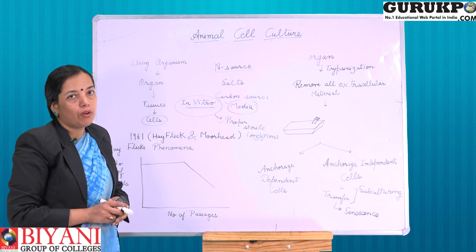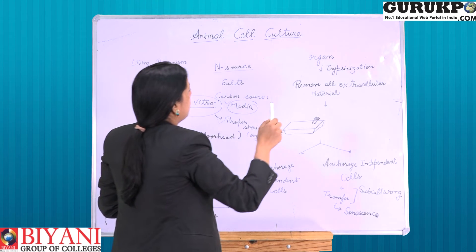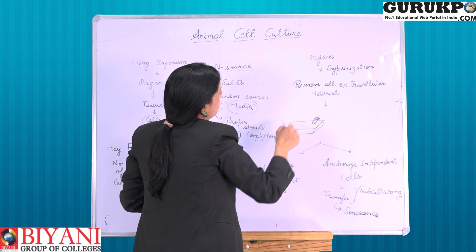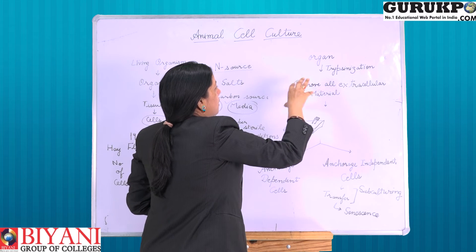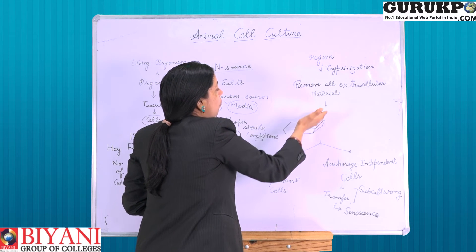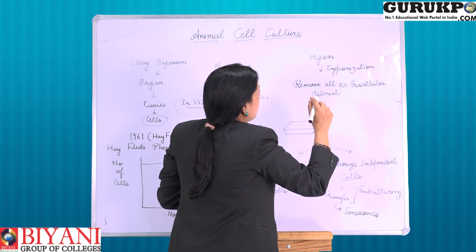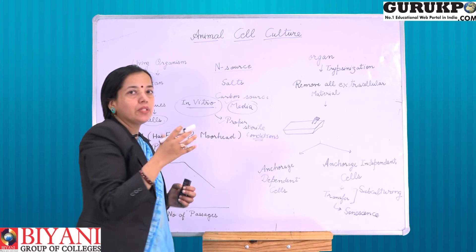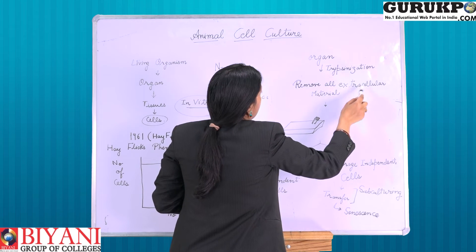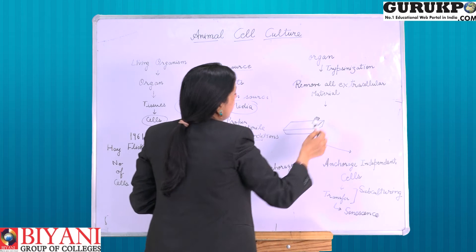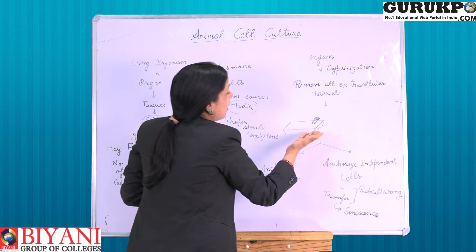Cells are generally grown on a nutrient media. The basic process for culturing a cell is: first, we take the organ from which we want to obtain the cells. To isolate the cells, we use an enzyme known as trypsin. Trypsin is a protease enzyme which breaks the extracellular material — the extracellular proteins that join the cells to each other. Trypsin breaks this extracellular material and the process is known as trypsinization. After removing the extracellular material, we get single cells, which we then grow on the nutrient media.